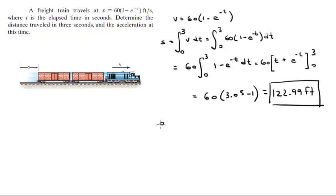Now the acceleration is equal to the derivative of the velocity with respect to time. So when you derivate this equation, it's easier if you distribute the 60: 60 minus 60 e to the negative t. So when you derivate this, you get that this is equal to 60 e to the negative t.